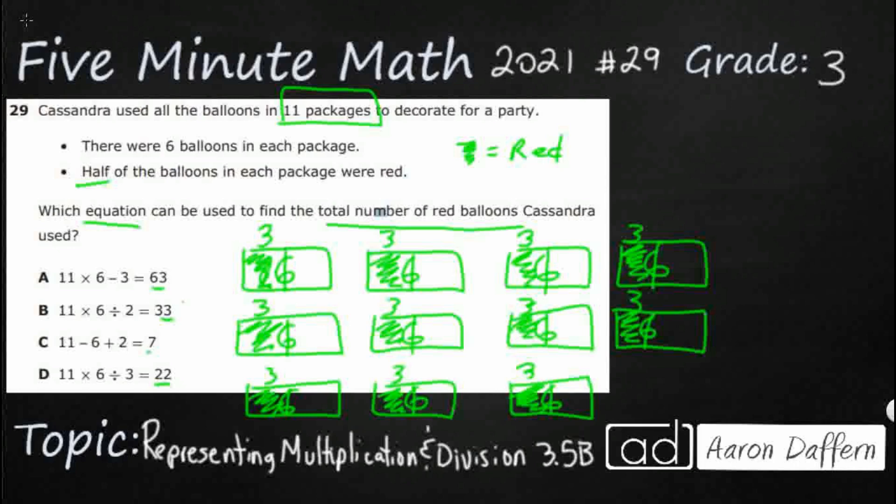So I'm thinking B. Let's see if we can match up what we did here. Well, first, we took our 11 packages, right? And we've got six balloons in each package. We took 11 groups of six. So 11 groups of six is going to be 11 times six.